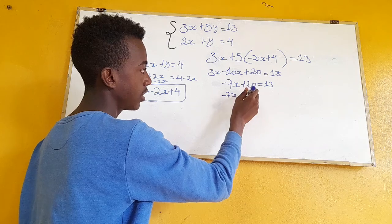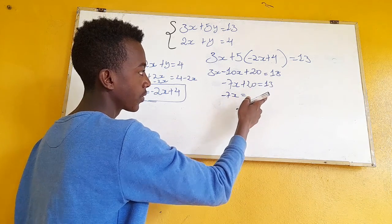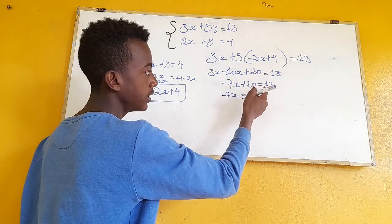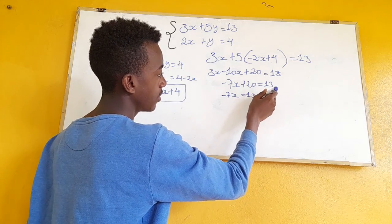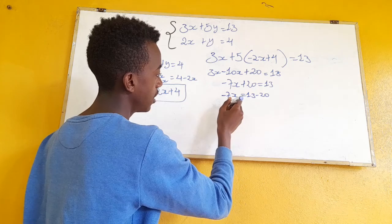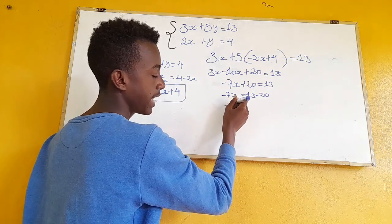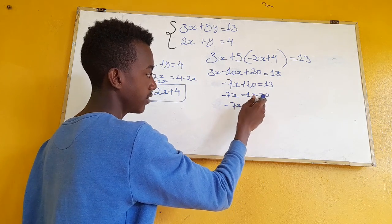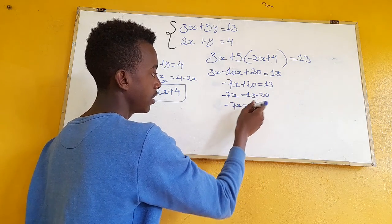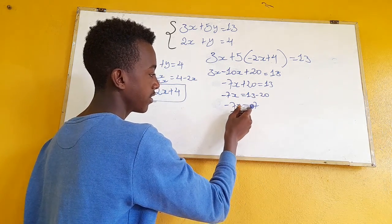Minus 7x is equal to 13 minus 20, which gives minus 7x is equal to minus 7. Dividing both sides by minus 7.